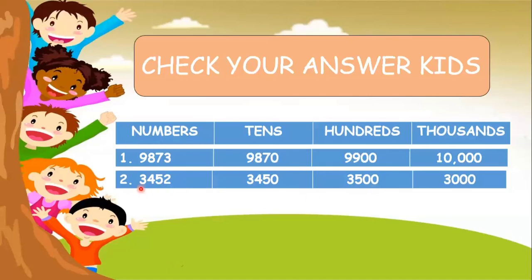In thousands: we will find the thousands place of the given number, which is number three. Look right next door — the right of number three is number four. Since four is less than five, we will keep number three, and four, five, and two will become zero. The answer is 3,000.